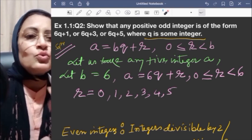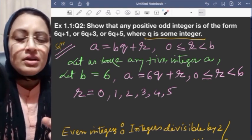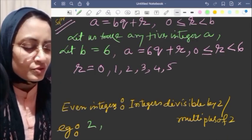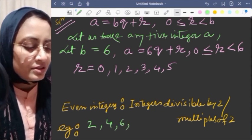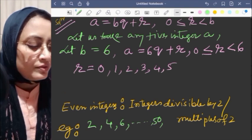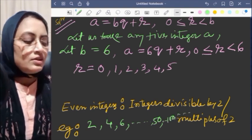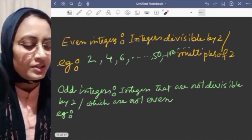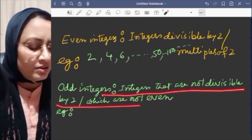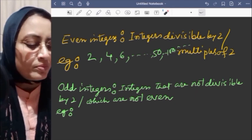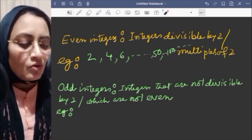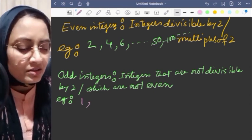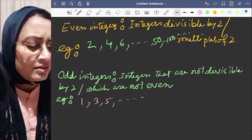Even integers are multiples of 2. If I think about multiples of 2, the table of 2: 2×1=2, 2×2=4, 2×3=6, and like this 2×25=50, 2×50=100, and so on. These are all even integers.